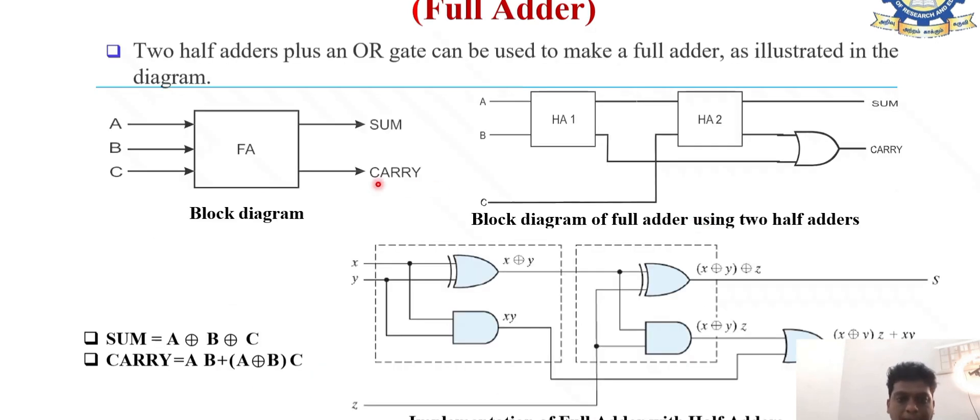By using two half adders, we can implement a full adder. This is the block diagram of a full adder with inputs A, B, C, and outputs sum and carry. With the help of one OR gate and two half adders, we can design a full adder circuit. Sum equals A exclusive-OR B exclusive-OR C, and carry equals A B plus A exclusive-OR B times C.